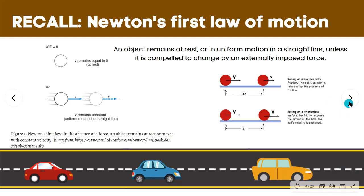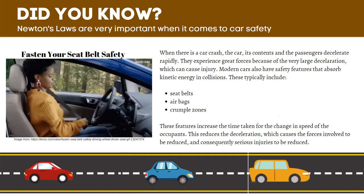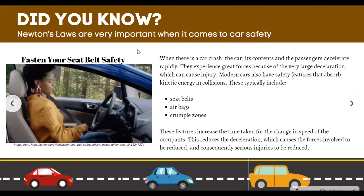Before we go to the second law, let us have a trivia. Did you know that Newton's laws of motion are very important when it comes to car safety? When there is a car crash, the passenger decelerates rapidly and experiences great forces due to the very large deceleration, which can cause injury. Most modern cars have safety features that absorb kinetic energy in collisions, including seatbelts, airbags, and crumple zones. These features increase the time taken for the change in speed of the occupants, reducing the deceleration and the forces involved, and consequently reducing serious injuries.